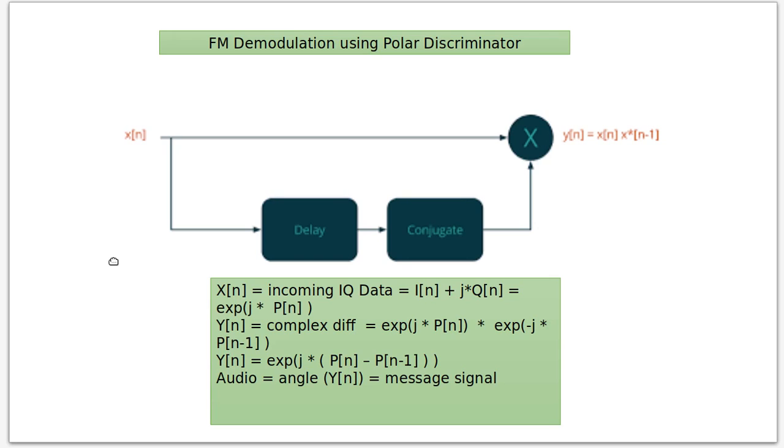So X(n) again is the incoming IQ data. We're going to take one side to the multiplier. The other side we're going to delay by one sample. Complex conjugate, basically a fancy way of saying we're going to multiply the imaginary part or the Q part by negative one so we flip its sign.